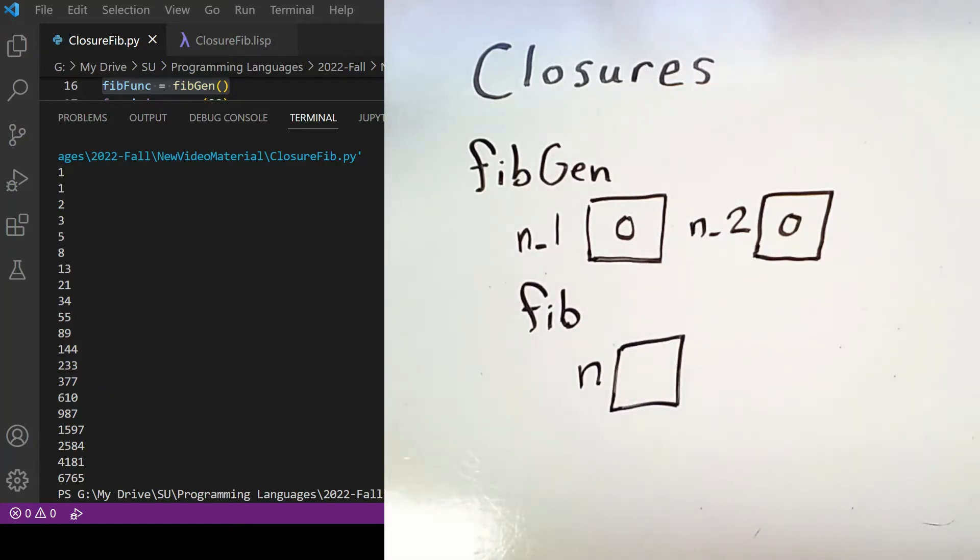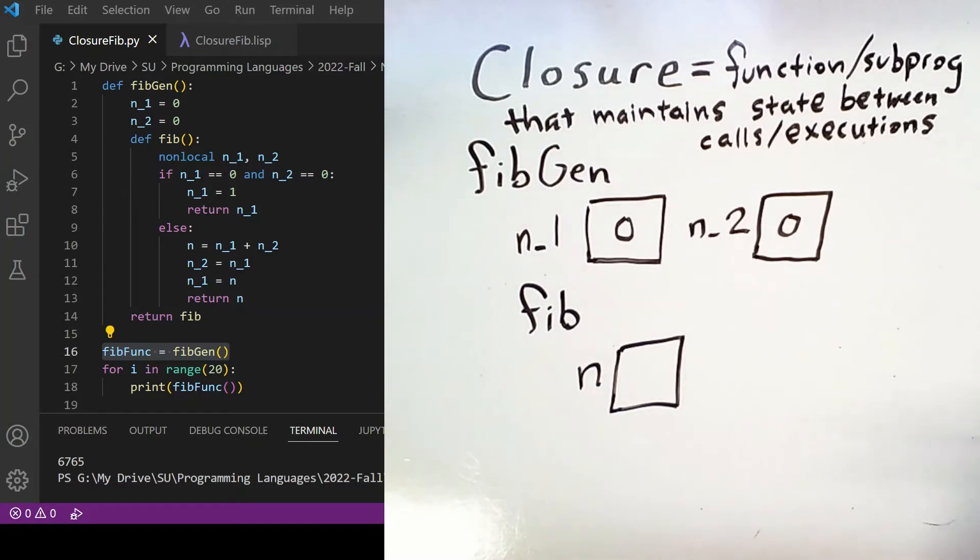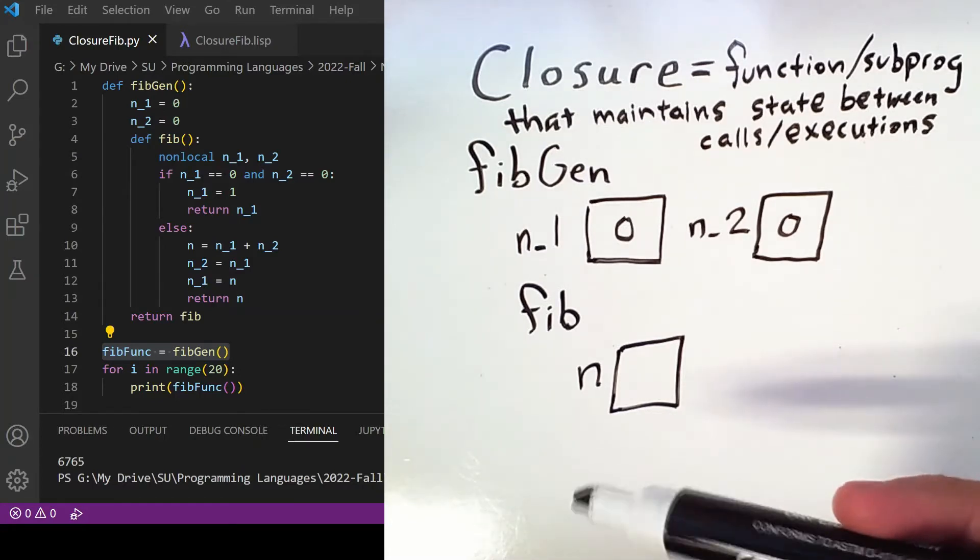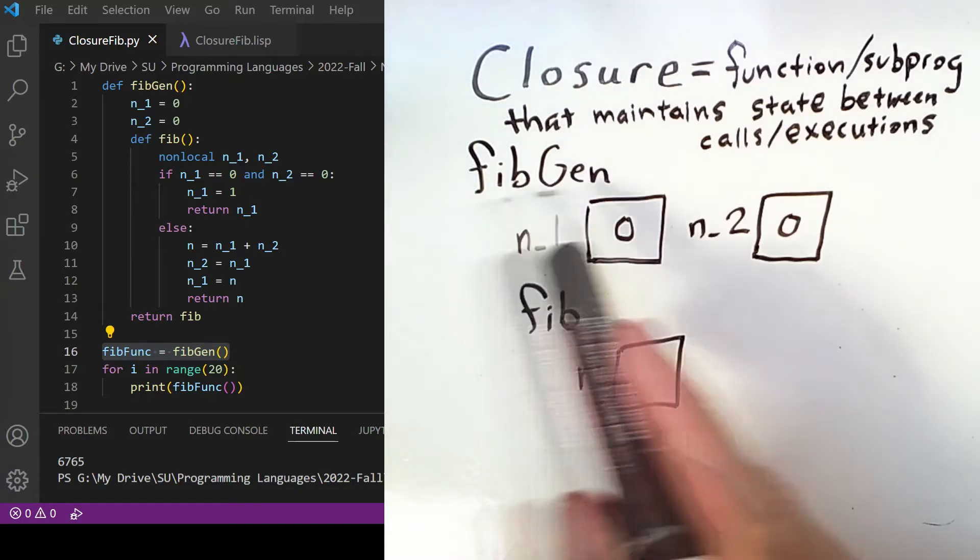A closure is a function that maintains state between executions or calls. Now remember that when we call fibfunc, we're actually calling the nested subprogram fib that was defined inside of fibgen.